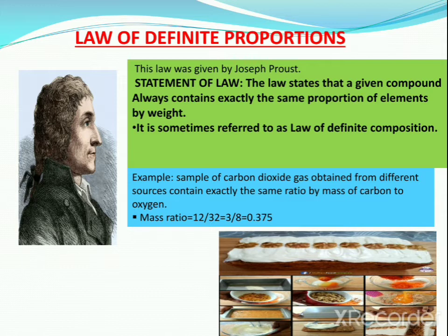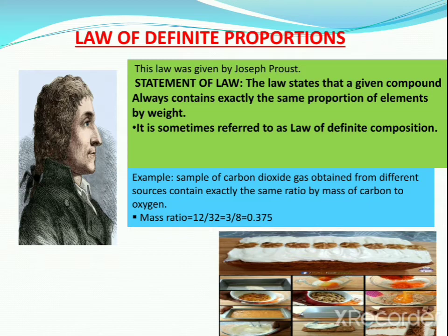In the law of definite proportions in chemistry — have you ever wanted to make more food than a recipe called for? Let's say you have a chocolate cake recipe that feeds 4 people, but you are going to a birthday party that will have 8 guests. You will need to double the recipe, which also means you will need to double the amounts of eggs, sugar, flour, butter, milk, and chocolate. The amount of each ingredient will double, but the proportions stay the same. This defines the law of definite proportions, which states that any chemical compound will always contain a fixed ratio of elements by mass.